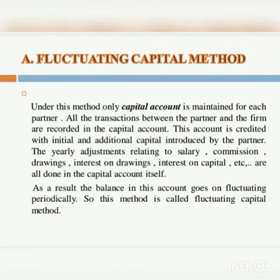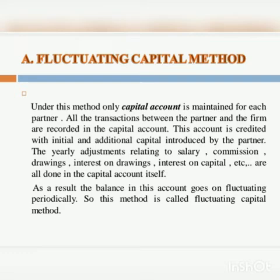Under the fluctuating capital method, only one capital account is maintained for each partner. All the transactions between the partner and the firm are recorded in the capital account. This account is credited with the initial and additional capital introduced by the partner. The yearly adjustments relating to salary, commission, drawings, etc. are all done in the capital account itself. As a result, the balance in this account goes on fluctuating periodically, so this method is called the fluctuating capital method.